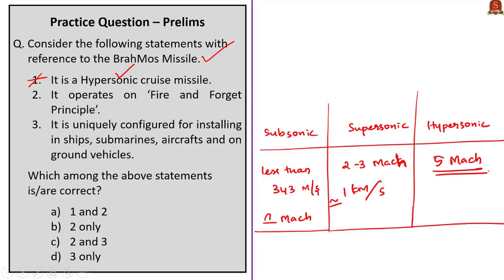The second statement: BrahMos operates on the fire and forget principle — correct, because missile guidance is not required after launch; it can hit the target even when the launcher is not in the line of sight. The third statement: it is uniquely configured for installation in ships, submarines, aircraft, and ground vehicles — also correct. So statements two and three are correct; the answer is option C: two and three only.